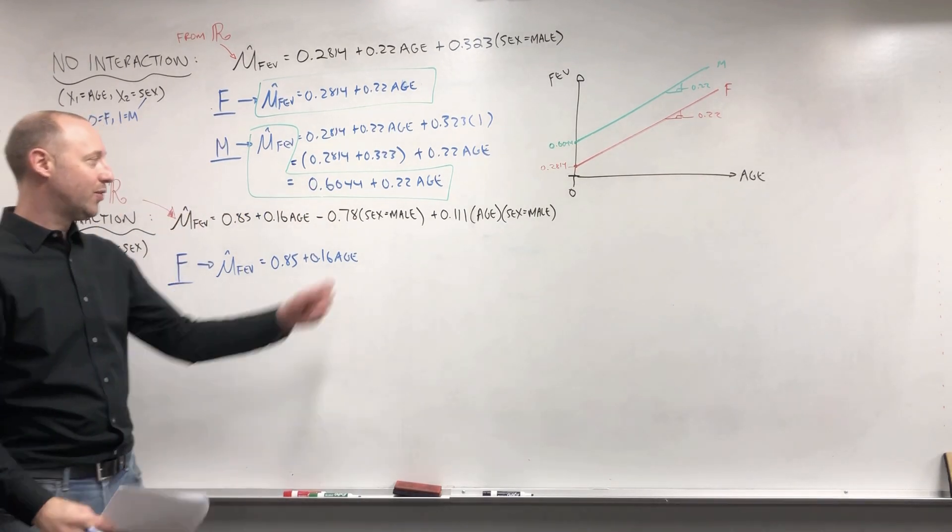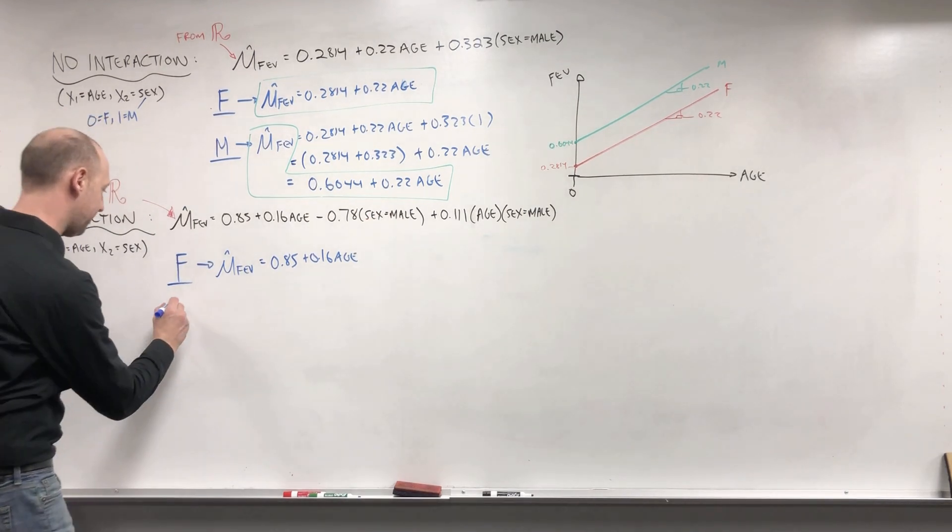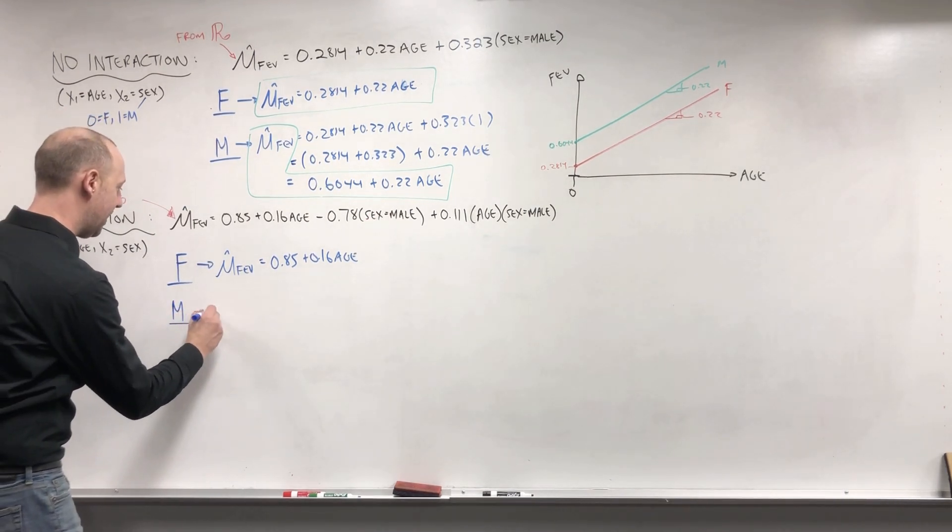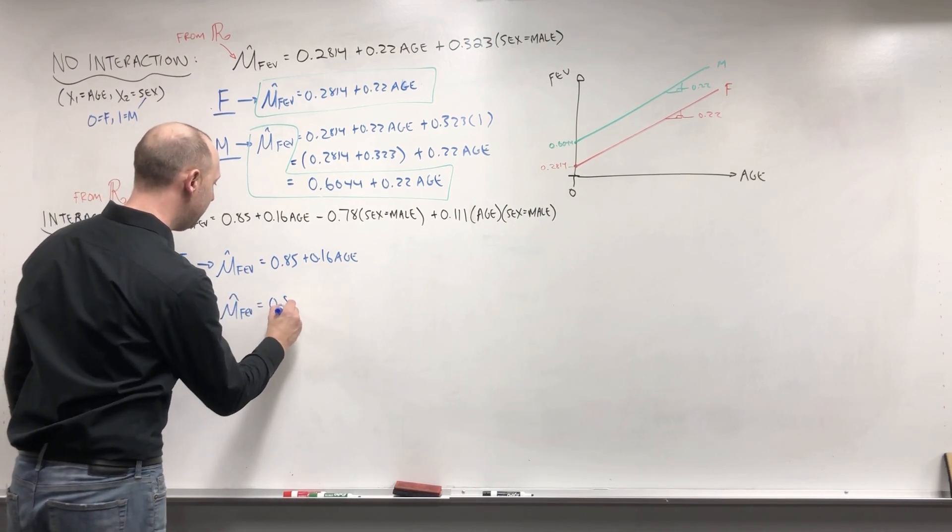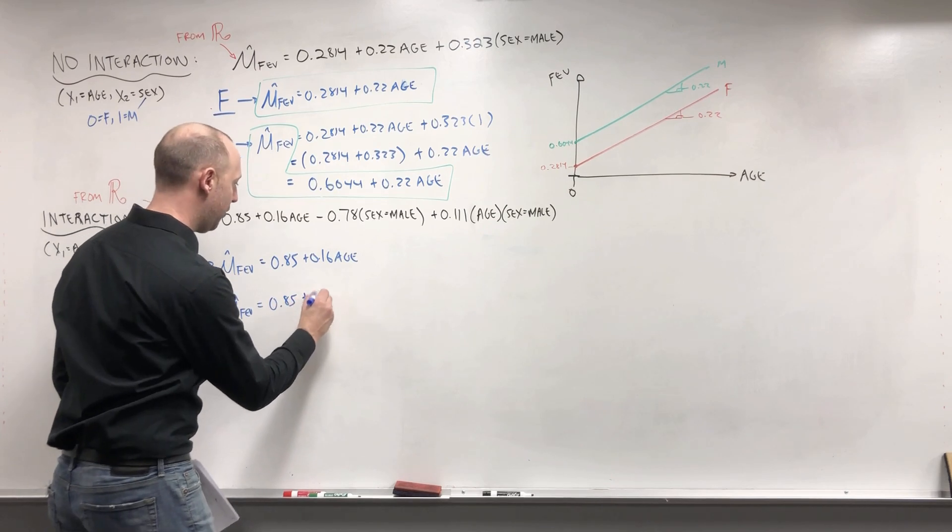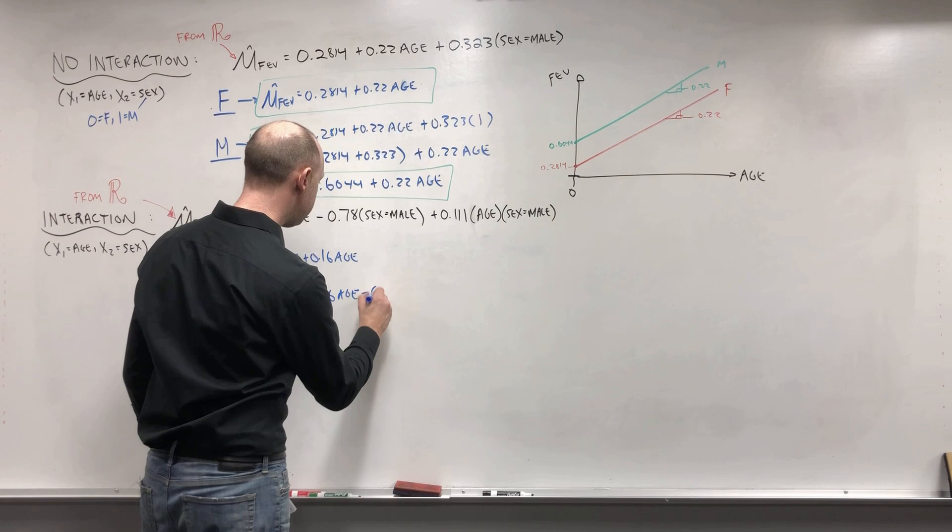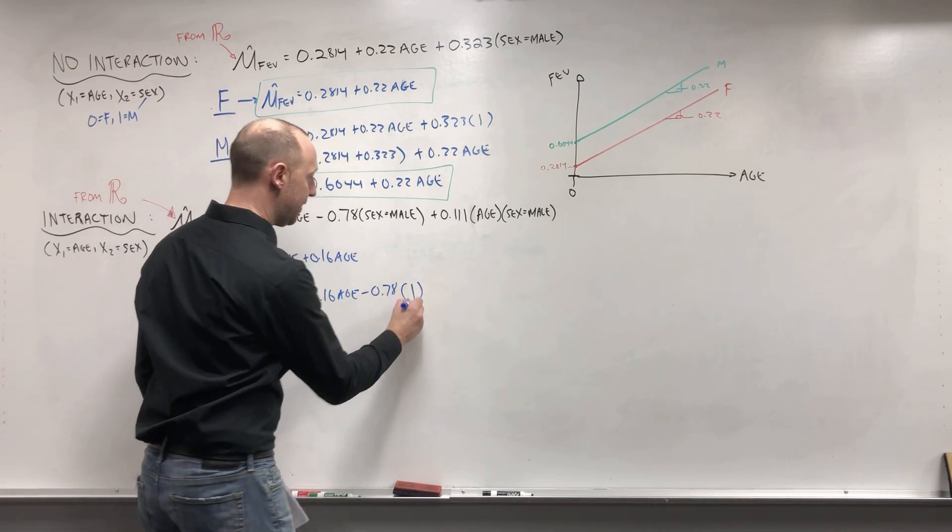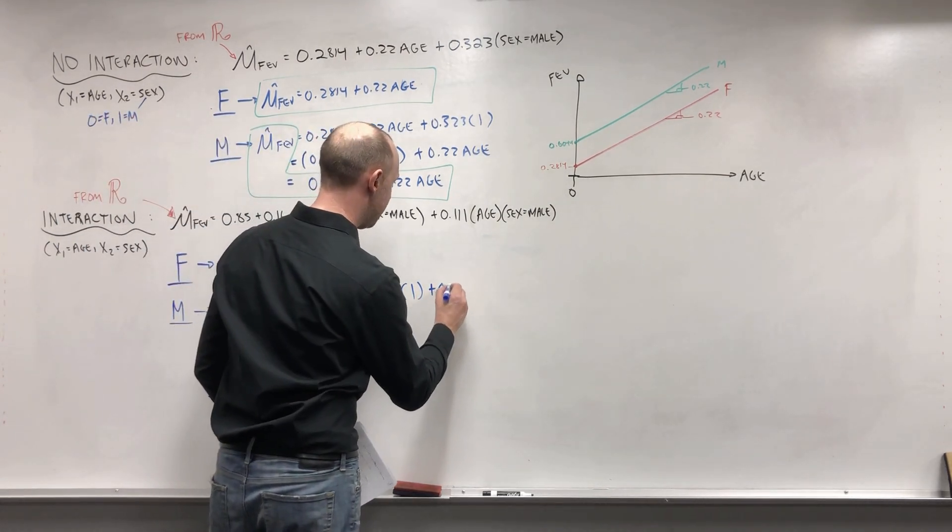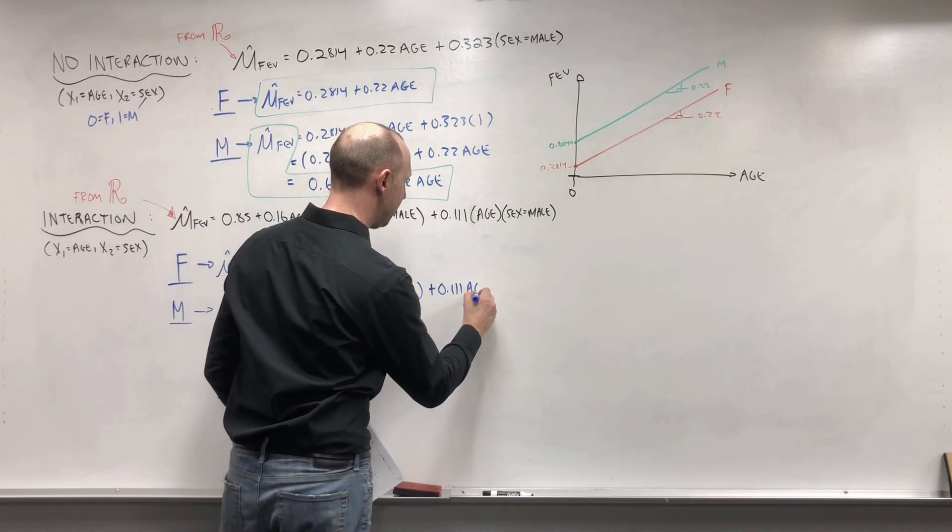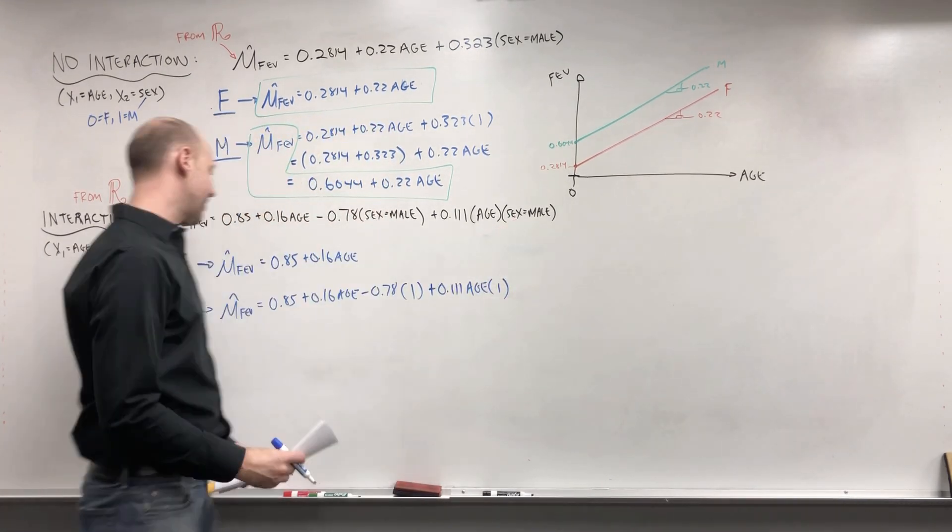So if we're looking at it for males, the mean FEV is 0.85 plus 0.16 times the age minus 0.78 times 1. Right now we're looking at males. The indicator for males takes on a value of 1 plus 0.111 times the age times 1. Right? The indicator for males takes on a value of 1.